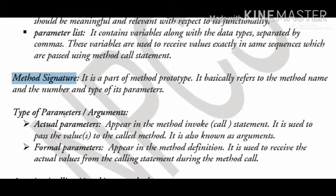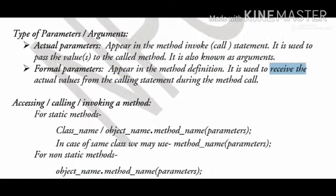Type of parameters and arguments: Actual parameters and formal parameters. Actual parameters appear in the method call statement or method invoke statement. Formal parameters appear in the method definition. Actual parameters are used to send or pass the value, whereas formal parameters are used to receive the actual values from the calling statement.